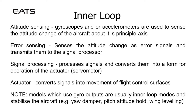The inner loop has attitude sensing with gyroscopes and/or accelerometers used to sense the attitude change of the aircraft about its principal axis. Error sensing is where attitude changes are sensed as error signals and are transmitted to the signal processor. During signal processing, signals are converted into a form for operation of the actuator, which converts signals into movement of flight control surfaces.